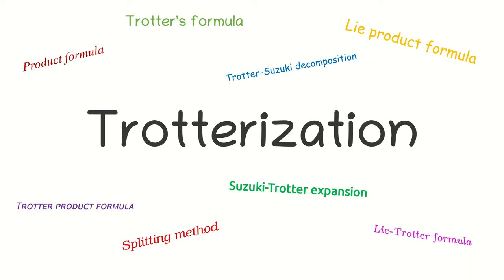Trotterization. In the previous video, you were introduced to the problem of Hamiltonian simulation. So, trotterization is the simplest approach to simulate the time evolution of a quantum system.